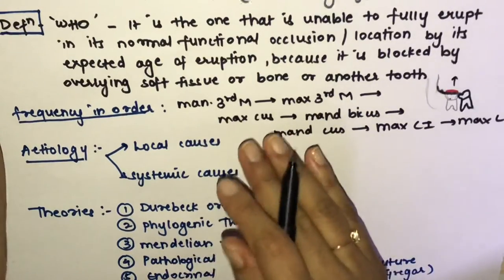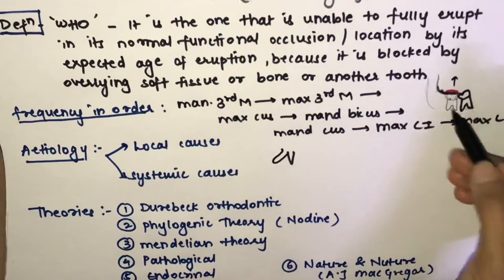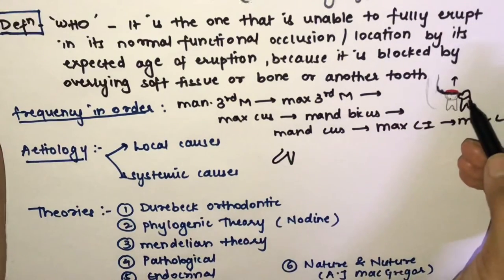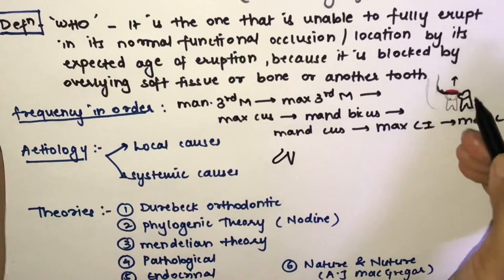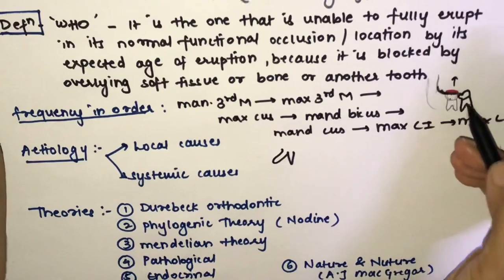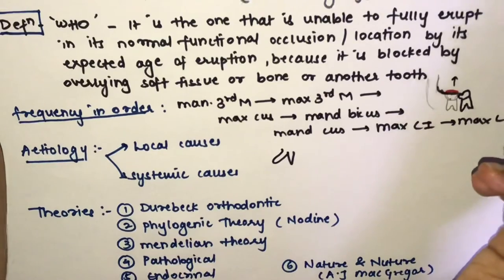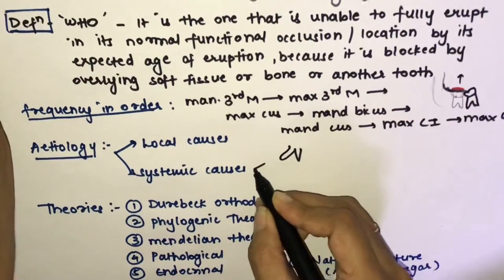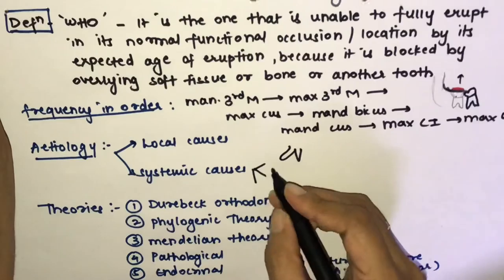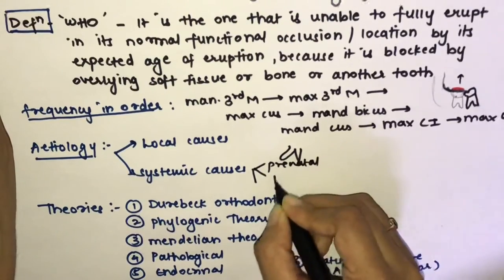Other local causes include dilaceration of the roots, irregularity in position and pressure from the adjacent tooth, density of the overlying or surrounding bone, and chronic inflammation. If there is pressure from an adjacent tooth not in proper position, it can lead to impaction of the third molar.